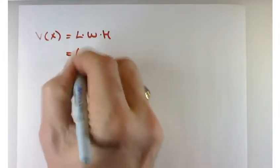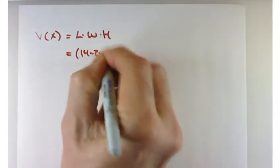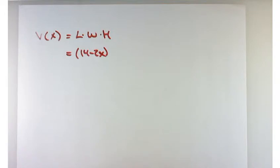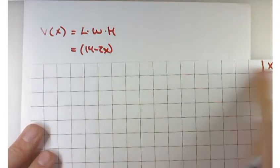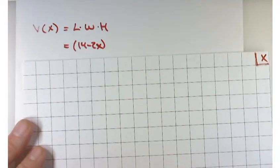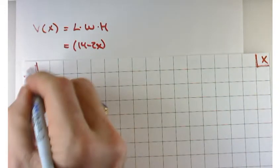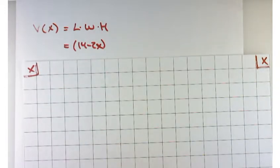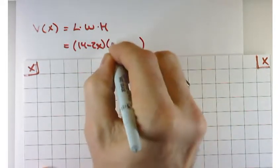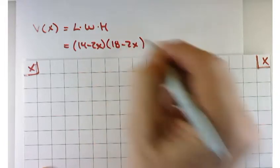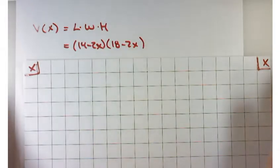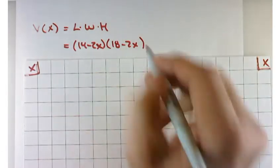If this is 18 across for the width, when I make my cuts here for X, I cut off that little bit of material so I can fold it up. What's going to be our width? 18 minus 2x. And then the height is going to be however much material I cut off, so that's going to be X.